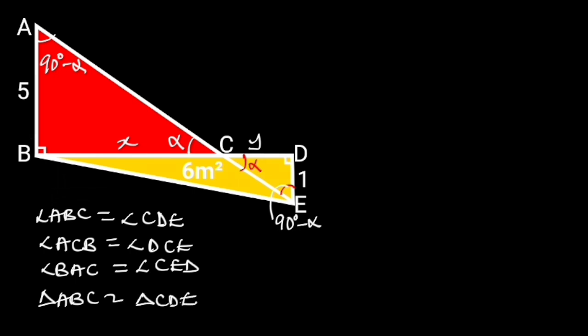And the proportionality of their corresponding sides is AB over DE is equal to BC over CD. AB is equal to 5, DE is equal to 1, BC is equal to X, and CD is equal to Y.